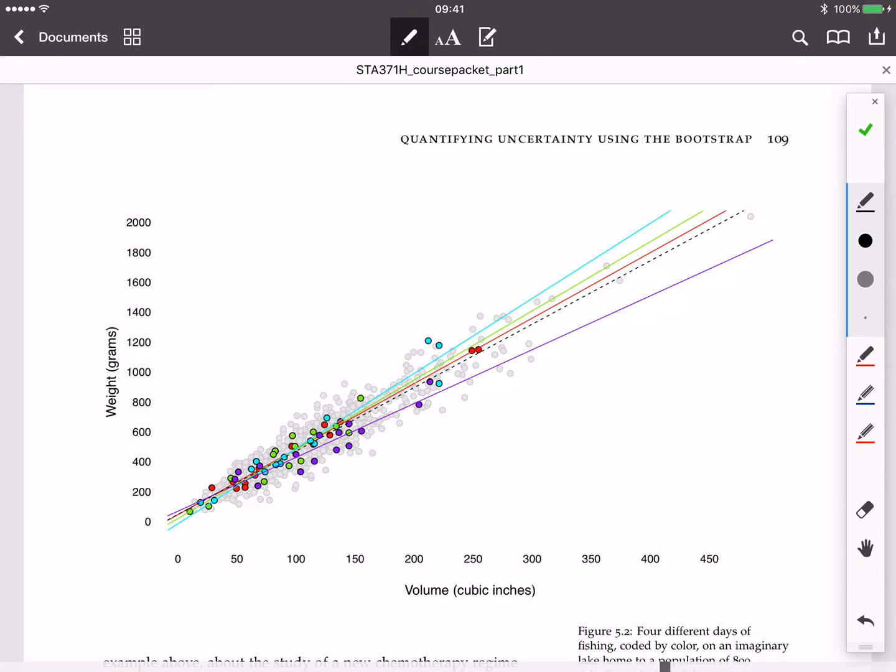You go out and you catch 15 fish. And because you're in a statistics class and you're kind of in stats-dork mode, you decide you're going to do a little bit of regression analysis with your fish. So you calculate the weight of all these fish and the volume of all these fish, and you run a regression line.